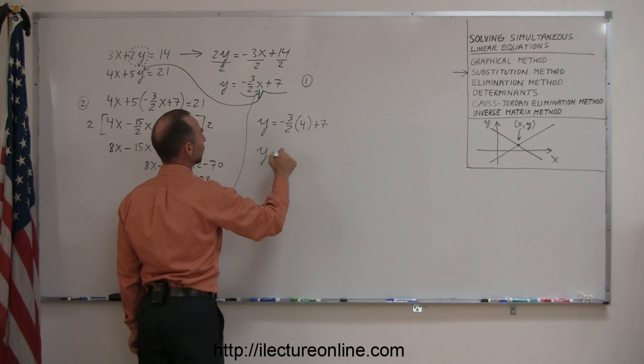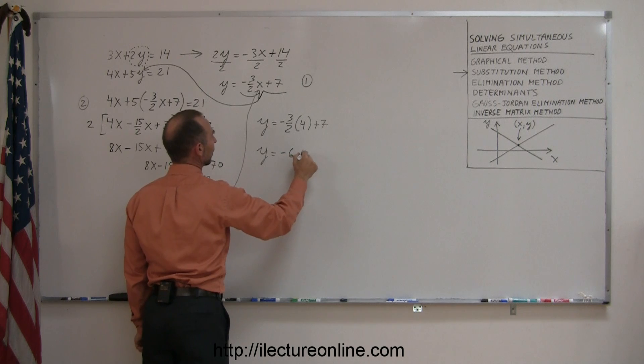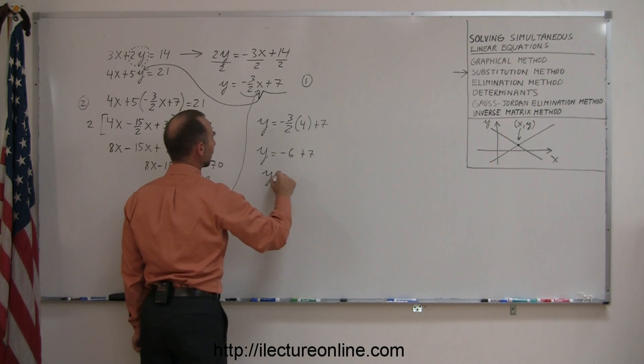So y equals, 2 goes into 4 two times, so this becomes 2 times negative 3, or minus 6 plus 7, or y equals 1.